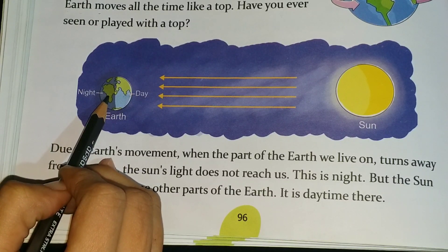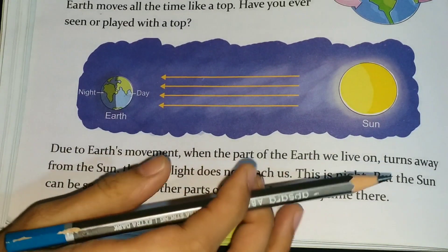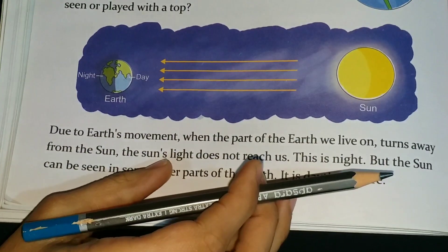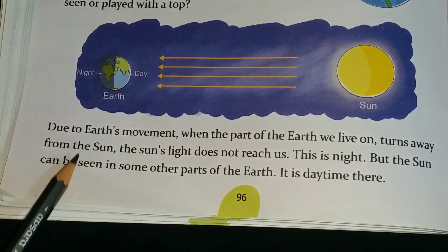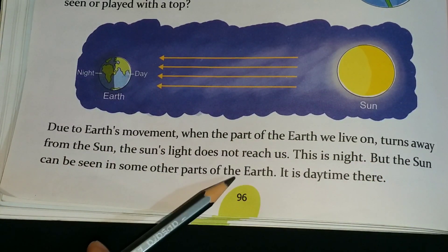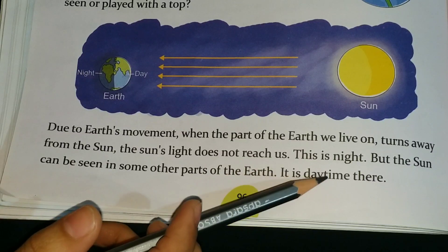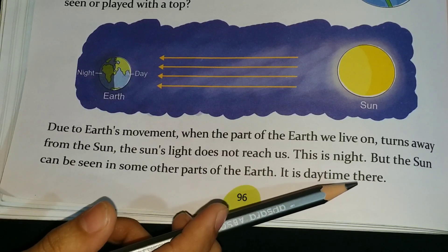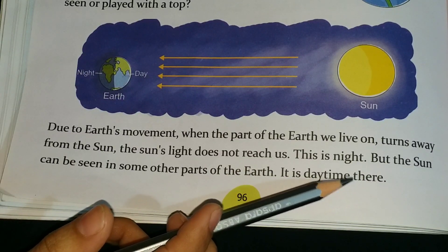So the part of the Earth which faces the sun experiences day, and the part of the Earth which is away from the sun experiences night. The sun can be seen in some other parts of the Earth — it is daytime there.